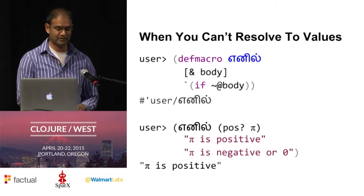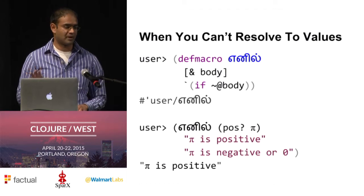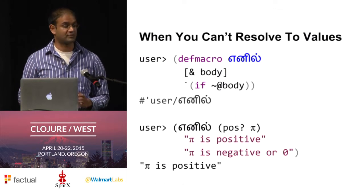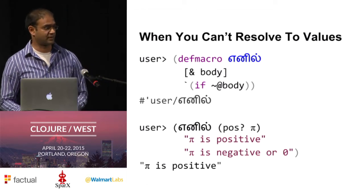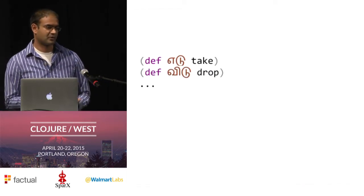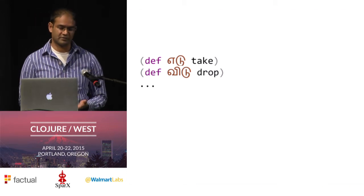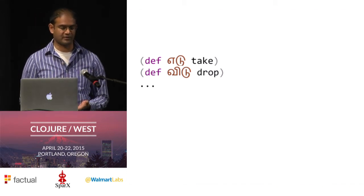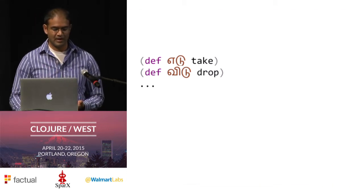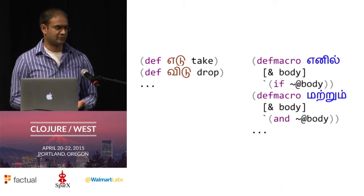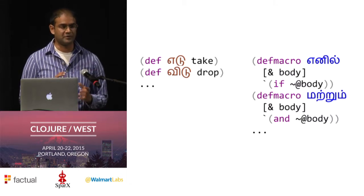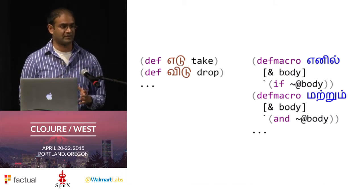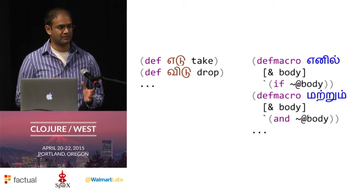We can say enel is pi positive, and if so, return the string 'pi is positive' — and that's what we get. Now, for all our values including functions, we can say def, and for everything else, we can say defmacro, and we can basically translate the entire language.